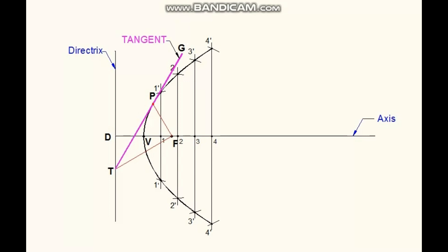Through point P, draw a perpendicular to the line TG. This line is NM, which is the normal of the parabola.